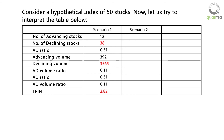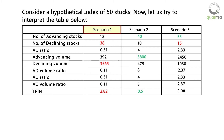You can follow the table in the video to understand the other two scenarios in this example. It can be seen from the table that Scenario 1 is when the index is declining, and Scenario 2 is when the index is advancing.